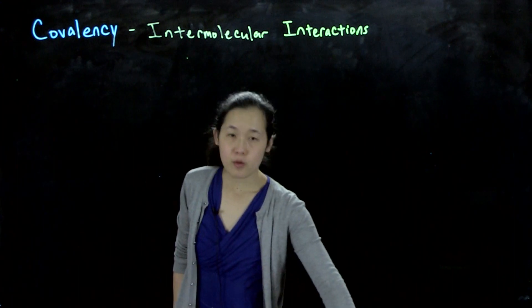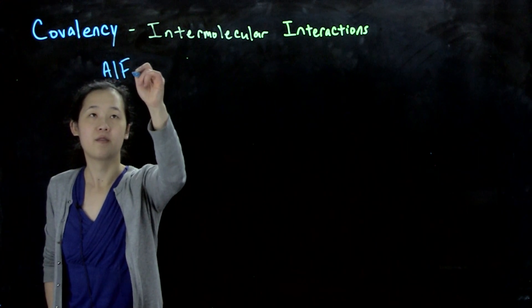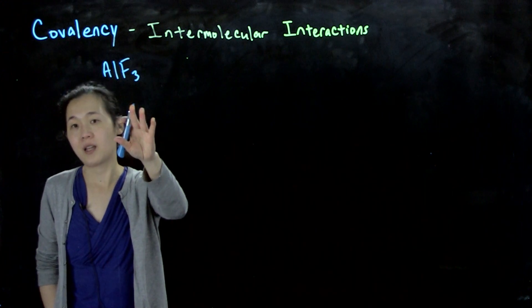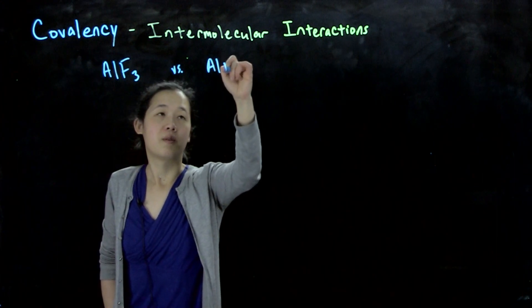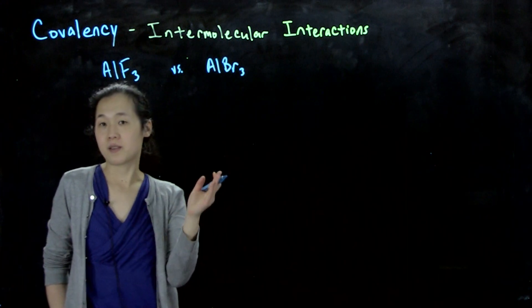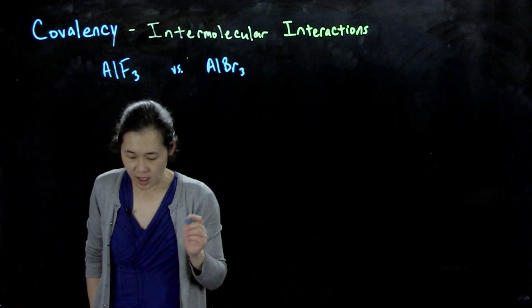If you remember, we talked about our different aluminum trihalides. We talked about AlF3, which we said is very ionic because it's a big delta chi, compared to aluminum tribromide, which was more covalent because the delta chi is smaller, and so that's more molecular.